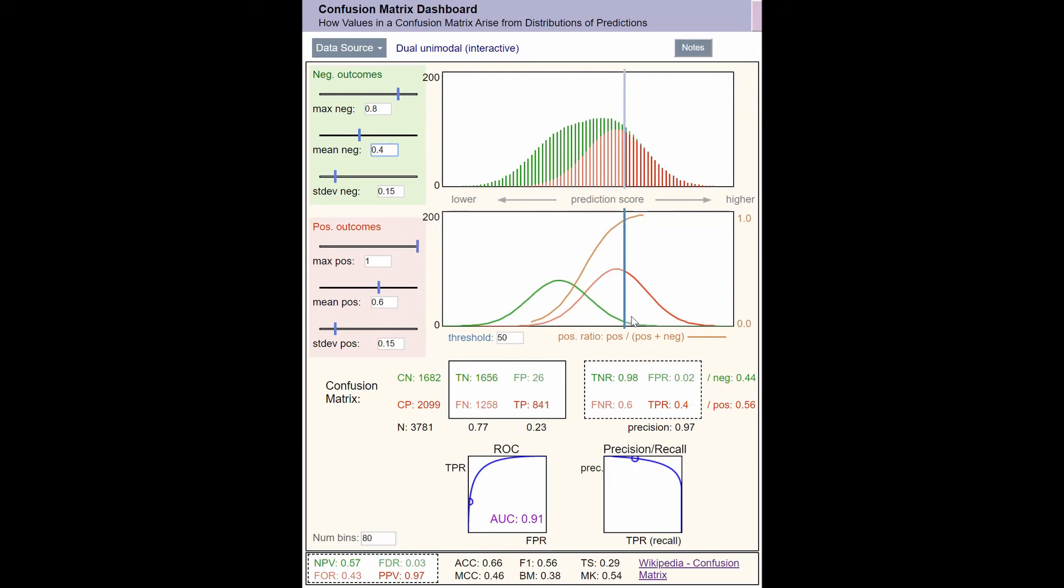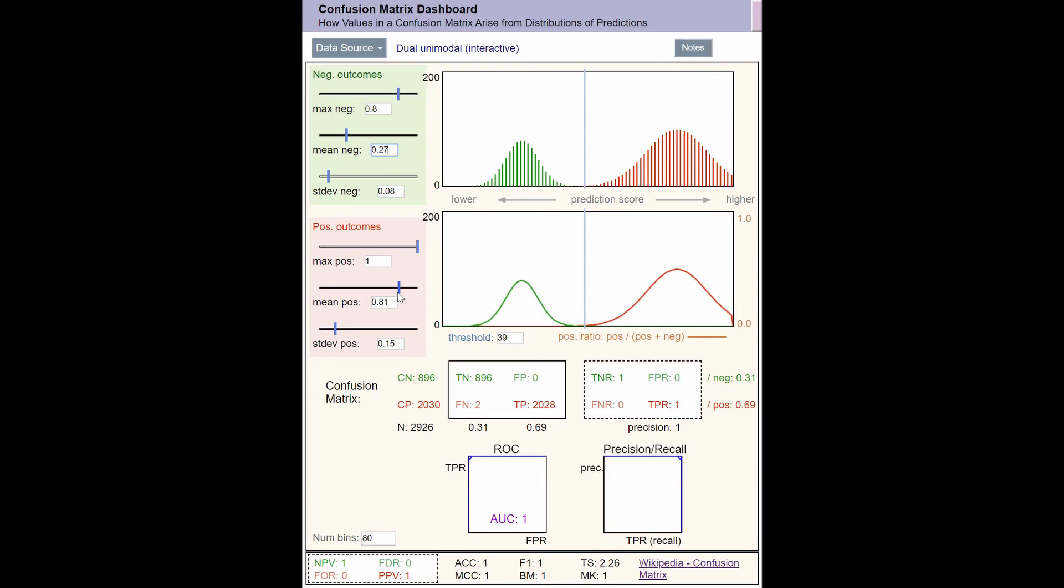Notice that the ROC curve does not depend on the threshold. It depends on the shapes of the positive and negative prediction distributions. The decision threshold chooses one tradeoff point that lies on the ROC curve. If the samples are perfectly separated, then the ROC curve bends more sharply. We can set a threshold that puts the tradeoff way up here in the upper left corner, where we get both a high true positive rate and a low false positive rate.